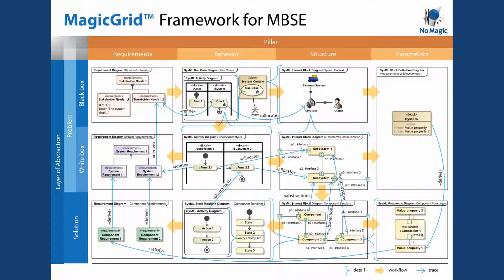I also don't like the fact that requirements are put first. To me, they're the tail end of the chain here, but there are some similarities. We'll also see that we use a lot fewer relationships than MagicGrid requires. So that's how we compare with MagicGrid.